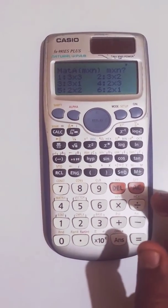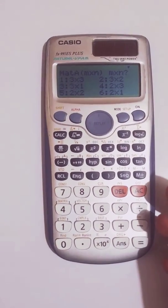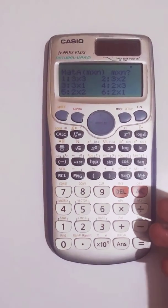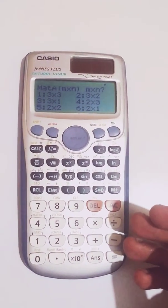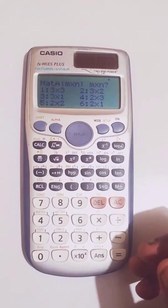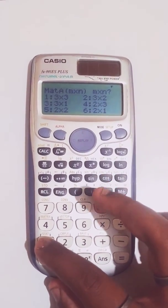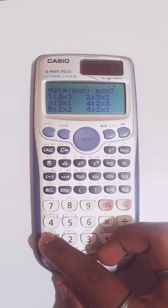Then whatever you want - 3x3, 3x2, 3x1, 2x3, 2x2, 2x1 - that is the option. Whatever you want, select this one. I want this one, 3x3, so I press 1.